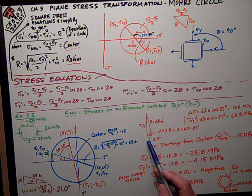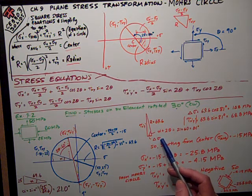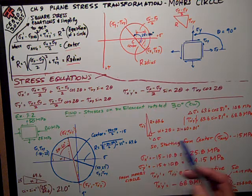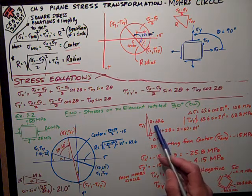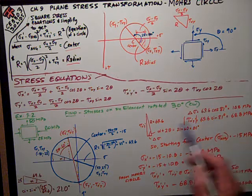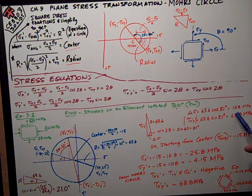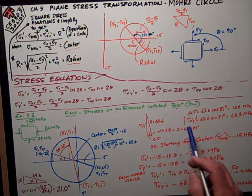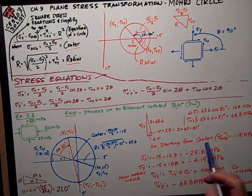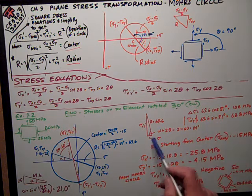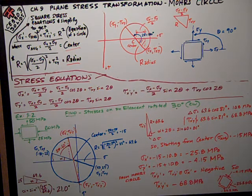If I know that, I can figure these other two sides of this triangle. The change in the normal stress, which I've called delta sigma, is the length of that line. That is 69.6, the radius, the hypotenuse, times the cosine of that angle, because it's the adjacent leg of that triangle. Works out to be 10.8 megapascals. The absolute value of this shear stress, this vertical dimension of that triangle, is 69.6 times the sine of that angle because it's the opposite, 68.8.